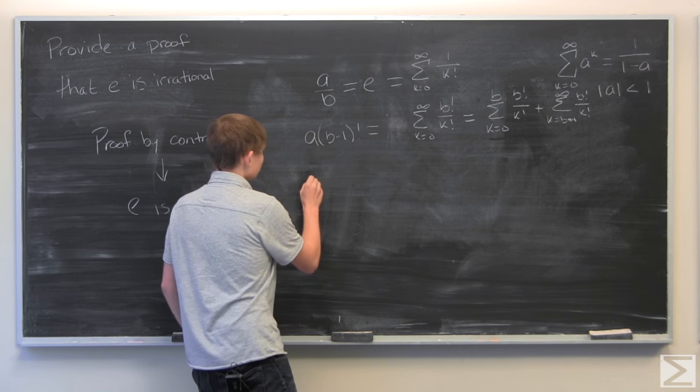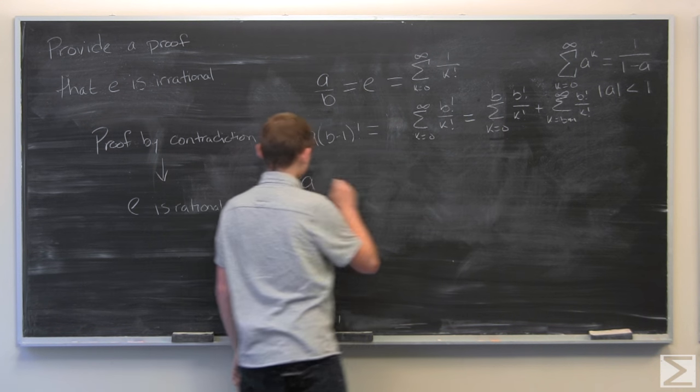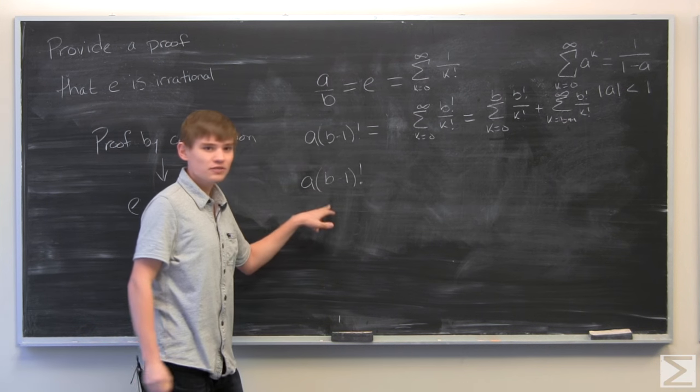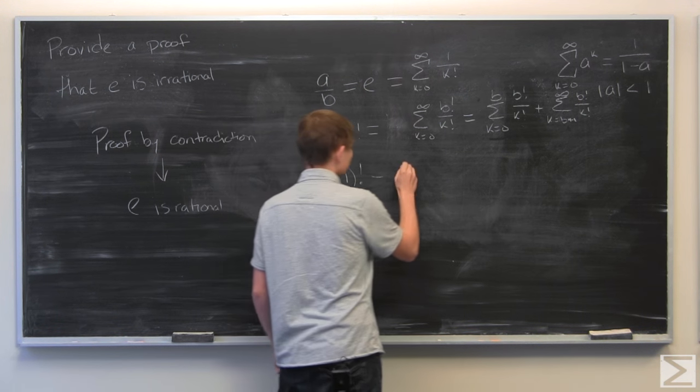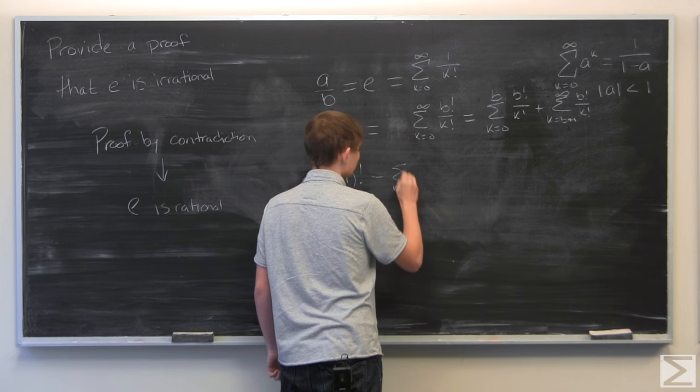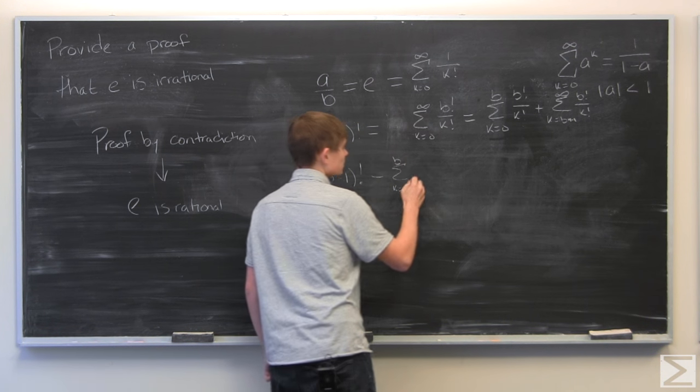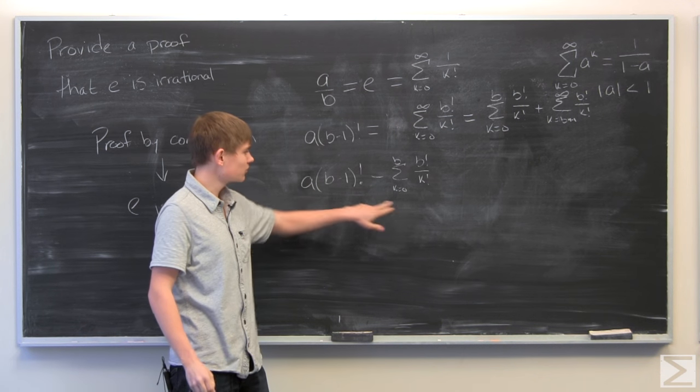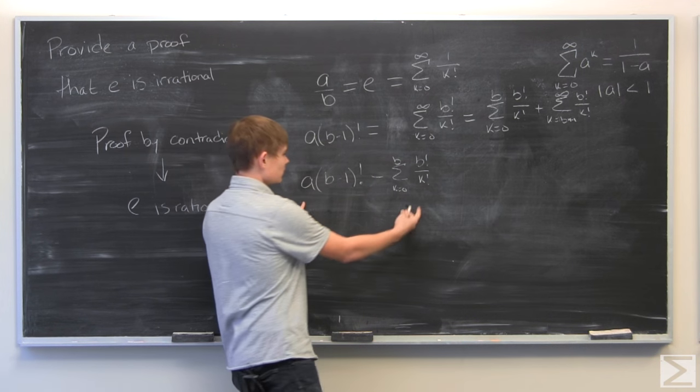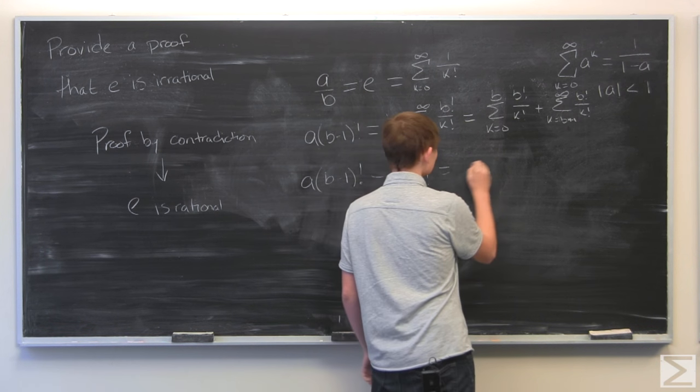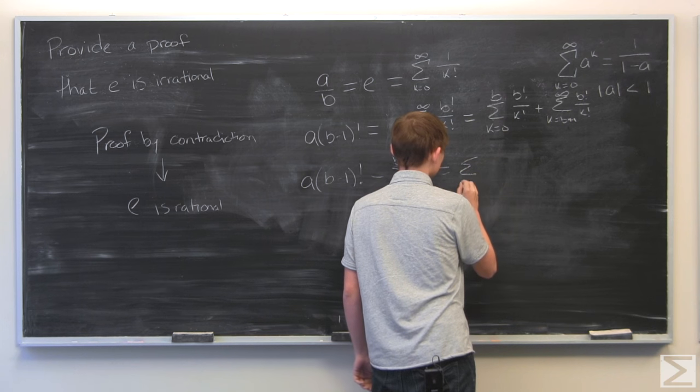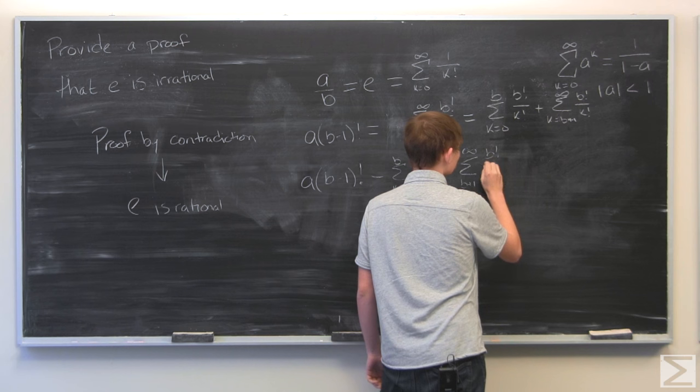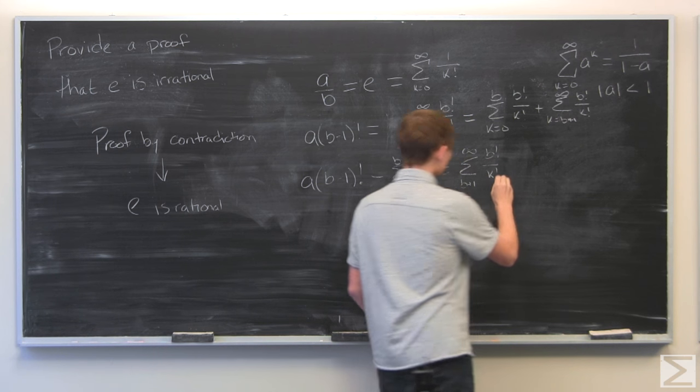So, now what we have is we can subtract this from both sides. And we will have A times B minus 1 factorial, which is an integer, minus the sum from 0 to B of B factorial over k factorial, which is also an integer.